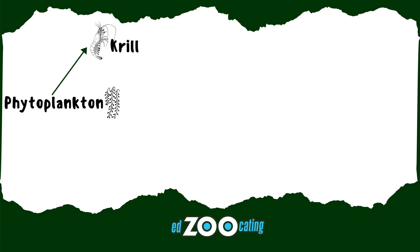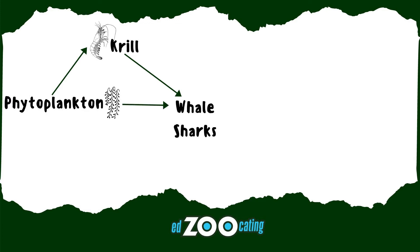Krill are a favorite food source for whale sharks, which are filter feeders. They swim around with their giant mouths open, sucking in a whole bunch of tiny organisms. So they're eating a lot of krill, but they're also eating a lot of that phytoplankton, which makes them both a primary and a secondary consumer.